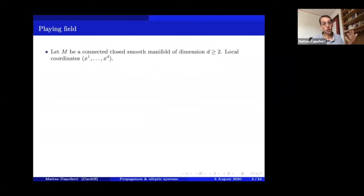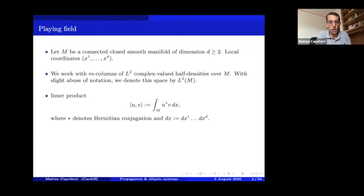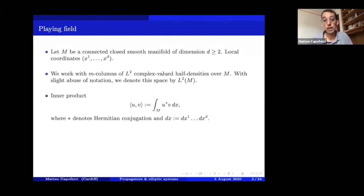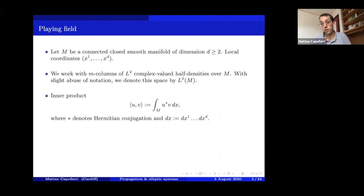We will be working on a closed, connected, smooth manifold M — compact and without boundary — of dimension at least 2, with local coordinates x1 through xd. Our function spaces will be spaces of M-columns of L2 complex-valued half-densities, where each entry is an L2 complex-valued half-density. I denote this space with slight abuse of notation by L2(M).